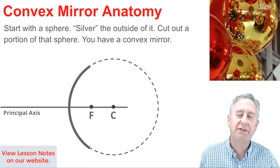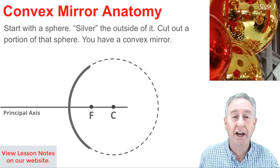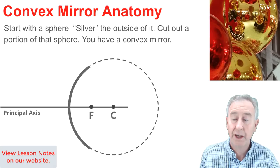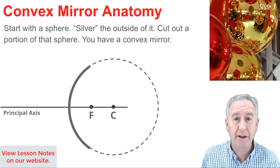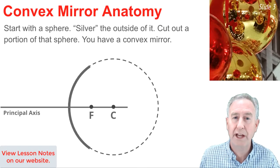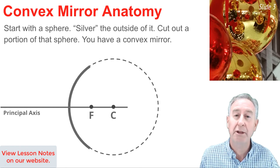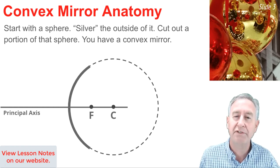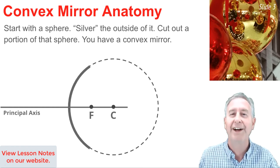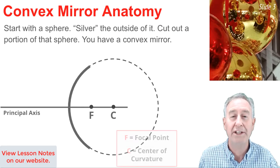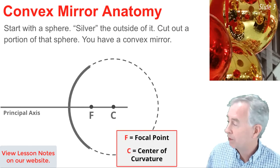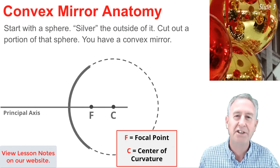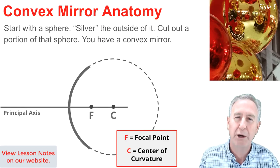If you start with a sphere and put a reflective coating on the outside of it, and then cut off a portion of that sphere, you have a convex mirror. A convex mirror has a principal axis, that's an imaginary line that passes through the center of the sphere from which the mirror was cut. Along the principal axis are two points, one is known as the center of curvature, marked C on the diagram, that's the center of the sphere from which the mirror was cut.